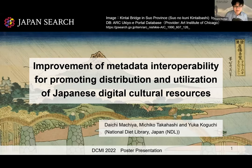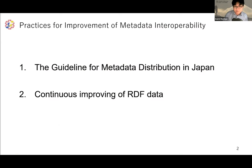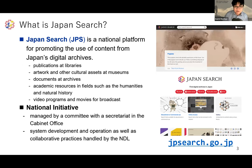Hello everyone. My name is Daichi Machia. I work at the National Diet Library Japan, NDL for short. Today I will present covering practices to improve metadata interoperability around Japan Search, or JPS for short. I will introduce two practices: the first is the guideline for metadata distribution in Japan, and the second is the continuous improving of RDF data. Let me begin by talking about what Japan Search is and how we collect and provide metadata.